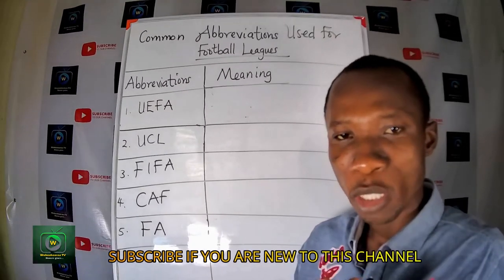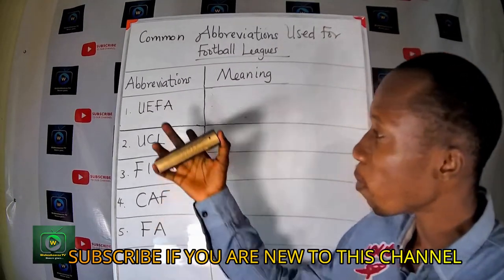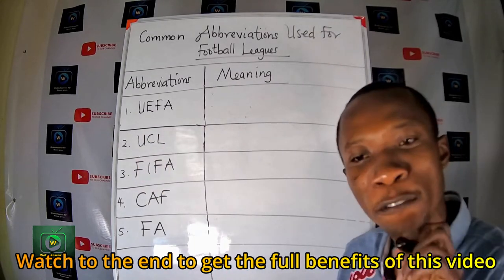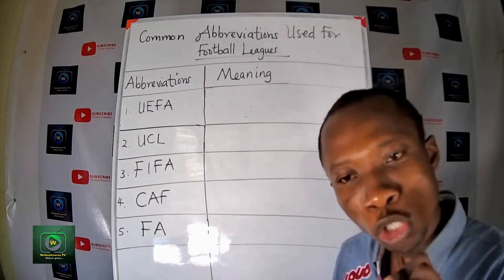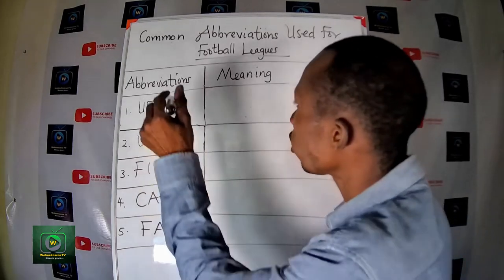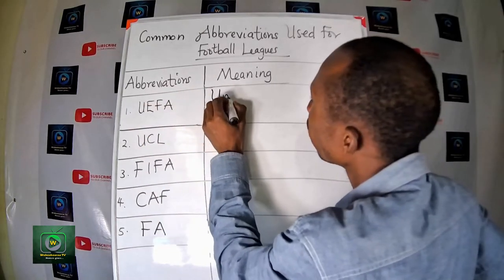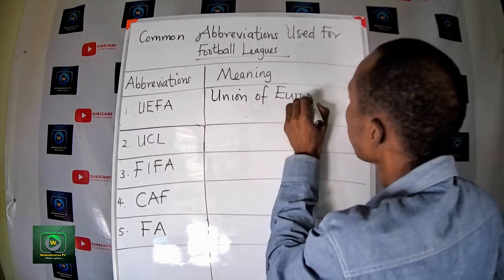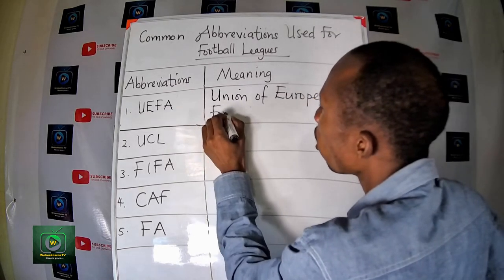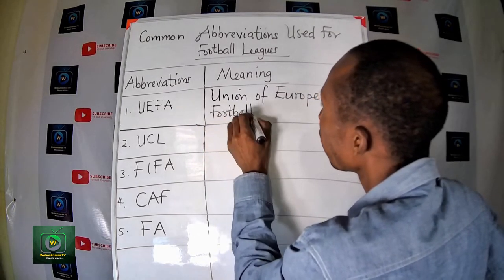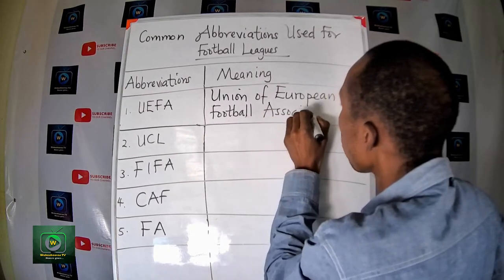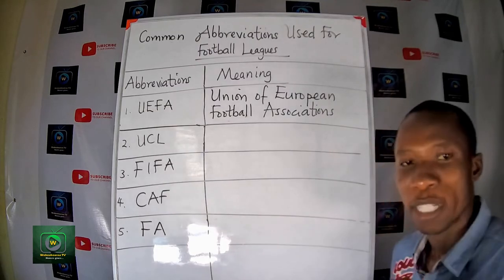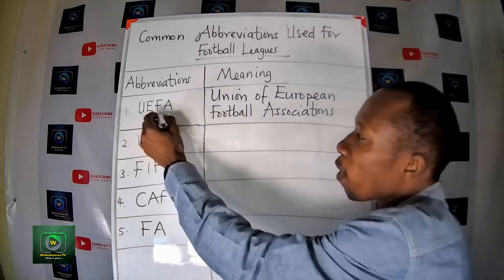So, common abbreviations used in football leagues. What's the meaning of UEFA? UEFA means Union of European Football Associations. All the football associations in Europe — the union is UEFA.